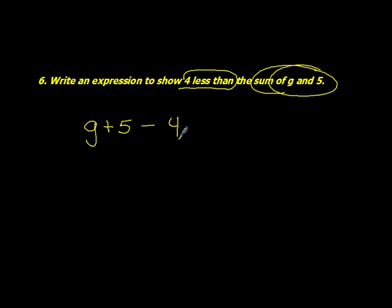Number 6, write an expression to show 4 less than the sum of G and 5. So pause the video, take a moment, go ahead and solve. If there's more than one way to show it, please show both ways. So 4 less than the sum of G and 5. So I can do G plus 5 minus 4. And I could also do 5 plus G minus 4. No parentheses are needed because we're doing the subtraction second.